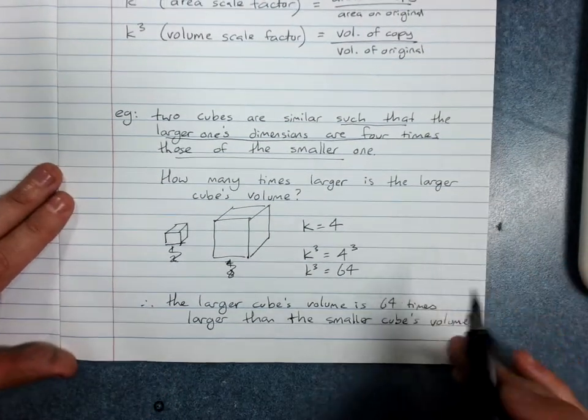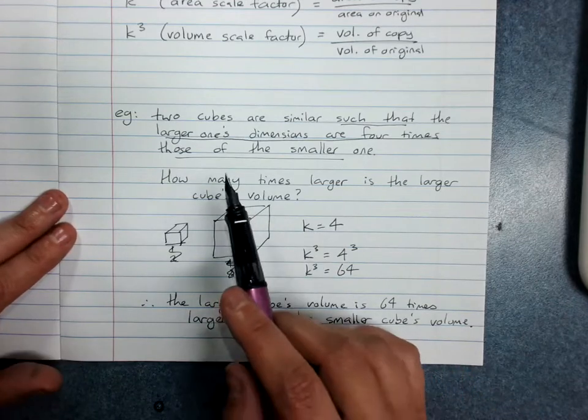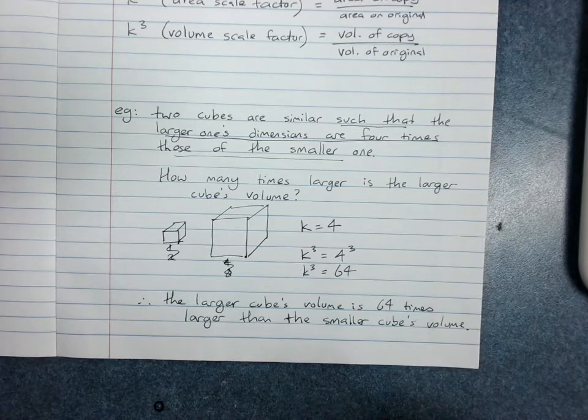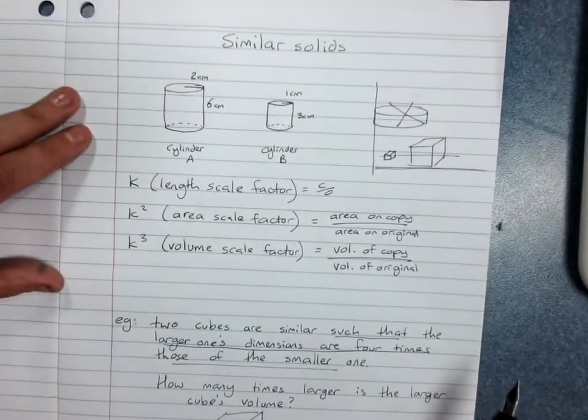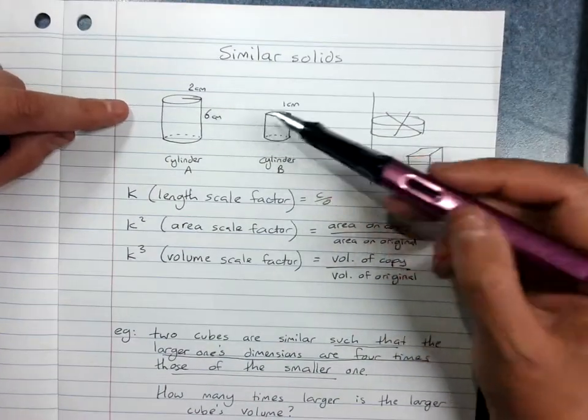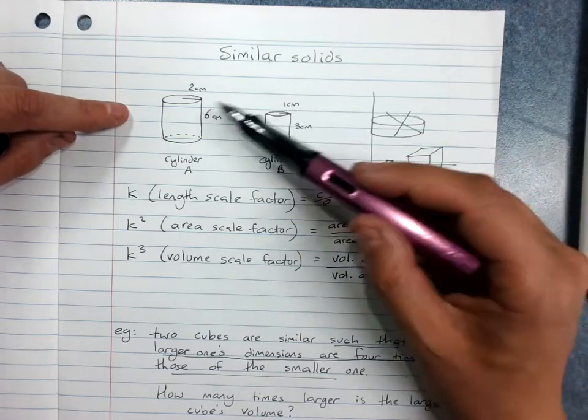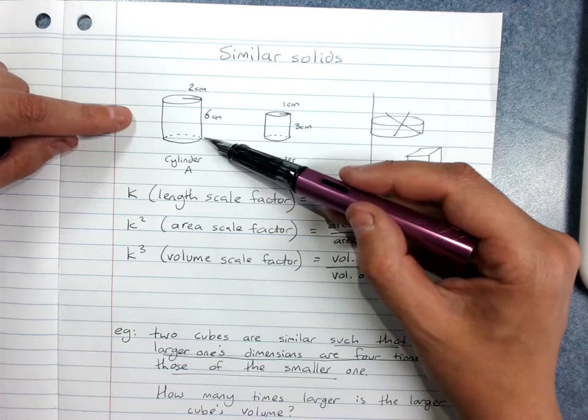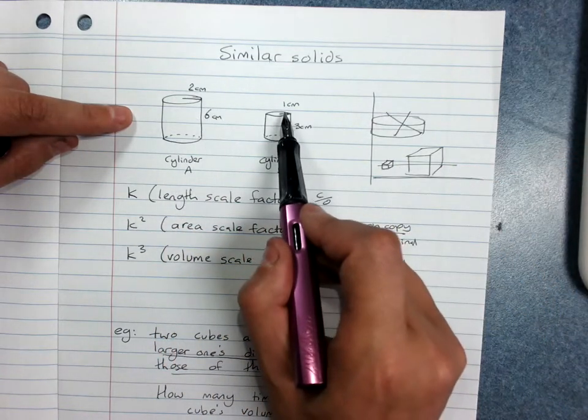And you could have done this for this sort of description, just four times larger. You could have done this for our standard look at similar shapes. So in these cylinders, I could find out how much larger this volume is. This is twice the size of that.